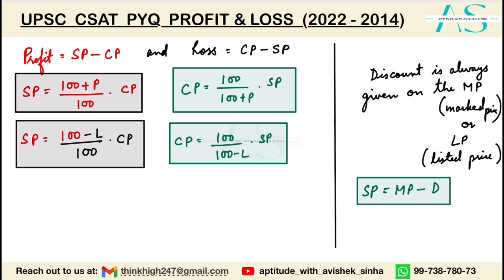Before we start with questions, let's look at the concepts first. SP denotes the selling price of an article, CP denotes the cost price — the initial value or initial investment. If you are earning a profit, that means your selling price is more than your cost price, and profit is calculated as SP minus CP.